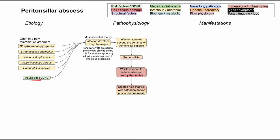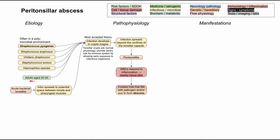You're at highest risk when you're an adult aged 20 to 40 years old. It can also come from other infections inside your mouth — you can have an acute bacterial tonsillitis that spreads to the potential space between the tonsils and the pharyngeal muscles, then develops in the cryptomagna and follows that pathophysiology. Most common in adults aged 20 to 40, but it also happens in kids and adolescents as well.